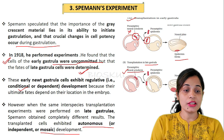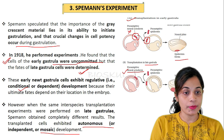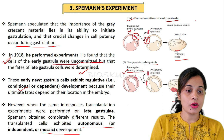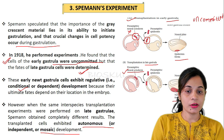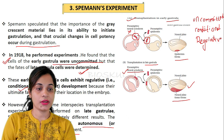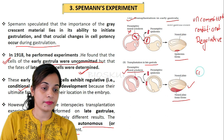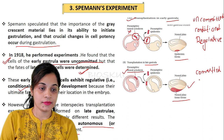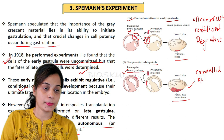In the early gastrula, cells are uncommitted and specification is conditional, and development is regulative. In the late gastrula, cell fate is committed, specification is autonomous, and development is mosaic development.